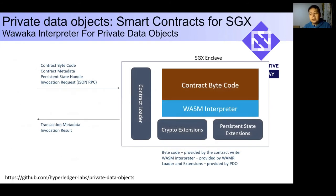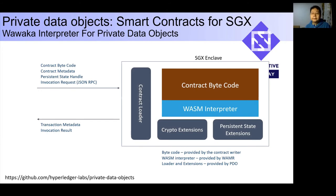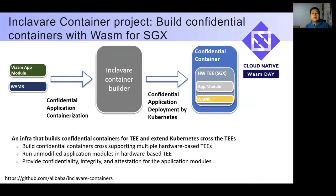Private Data Objects, or PDO, is an open-source project at Hyperledger Labs that enables sharing data and coordinating actions among mutually distrusting parties. PDO provides a secure framework for loading WASM-based smart contracts into an SGX enclave, executed with the WebAssembly Micro Runtime.